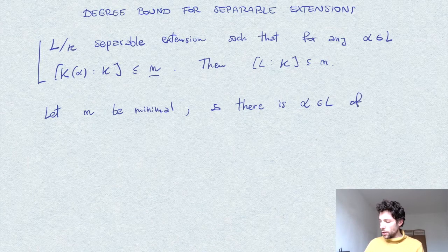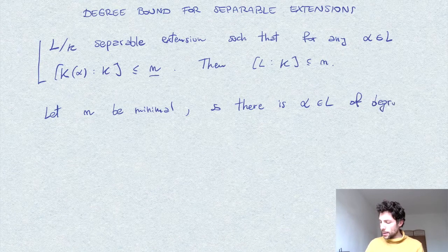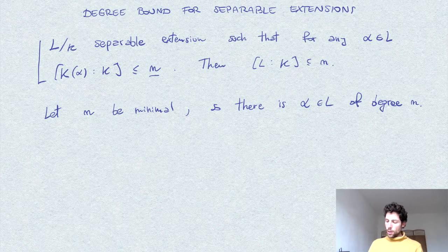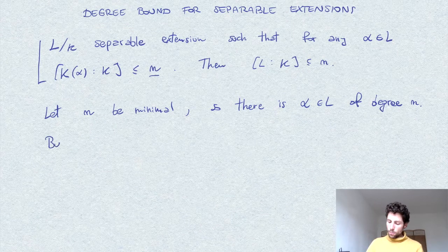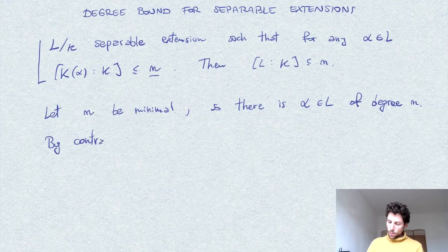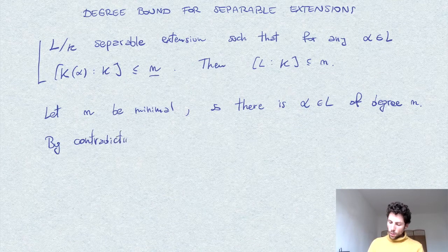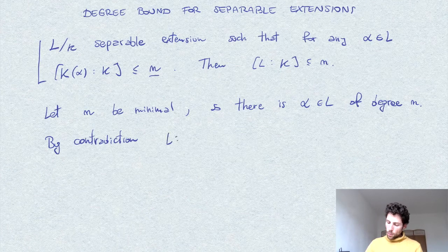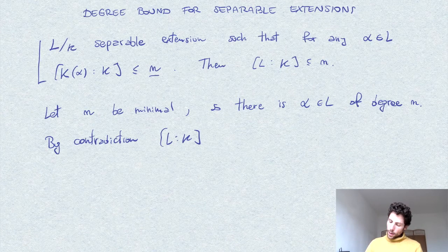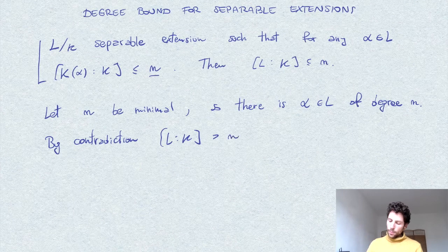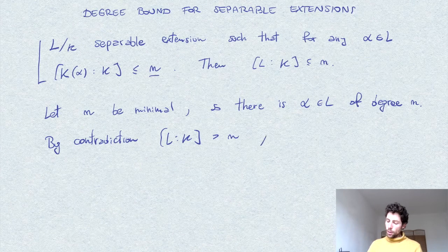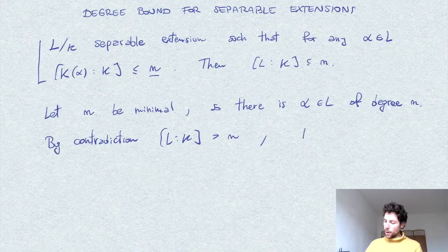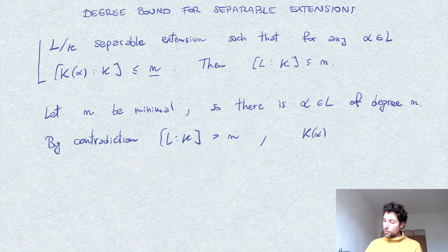So there is an element, say alpha, of degree exactly n. And we proceed by contradiction. So we assume that L over k has strictly higher degree than n. So in particular, since k of alpha is of degree exactly n, we have that k of alpha is different from L.